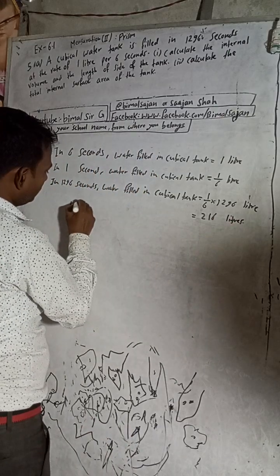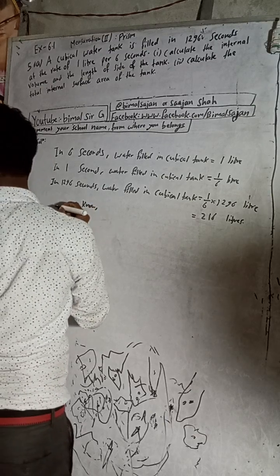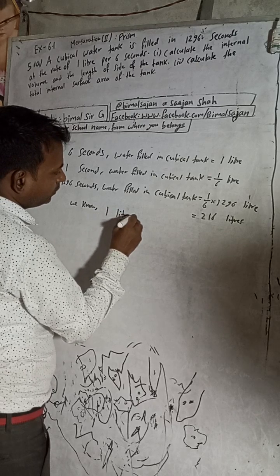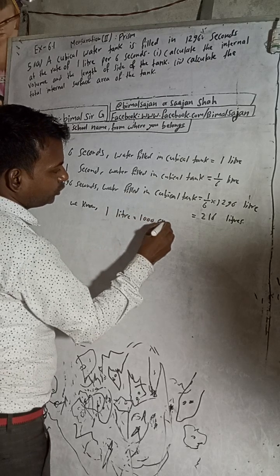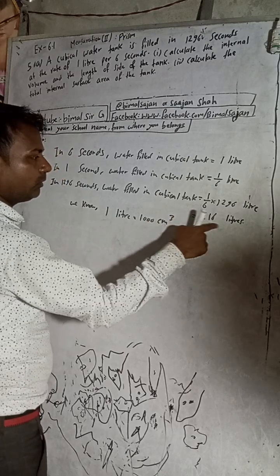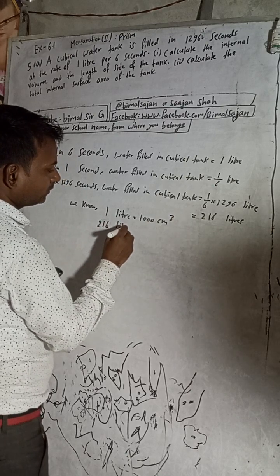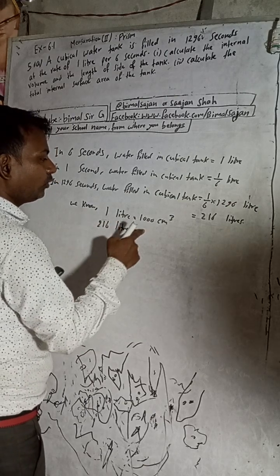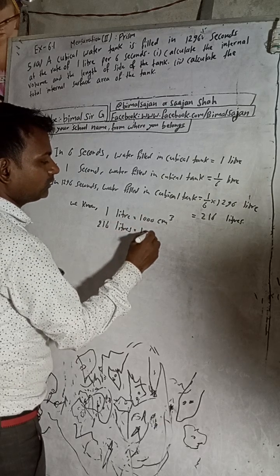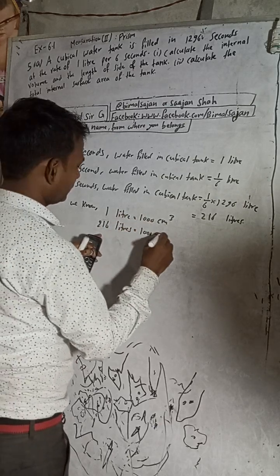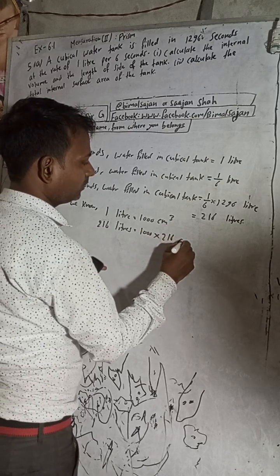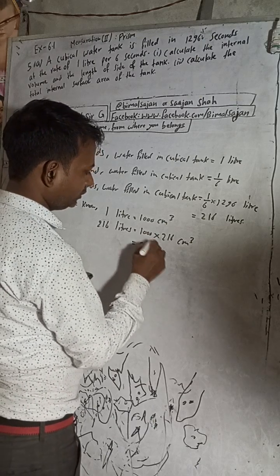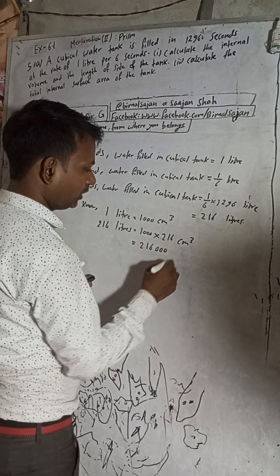We know that 1 liter is equal to 1000 cm³. So 216 liters equals 216 × 1000 = 216,000 cm³.